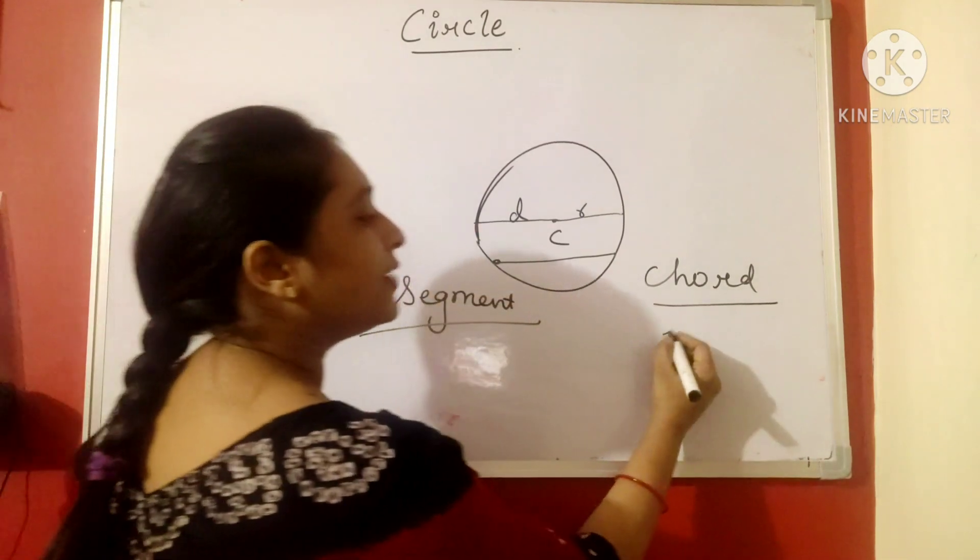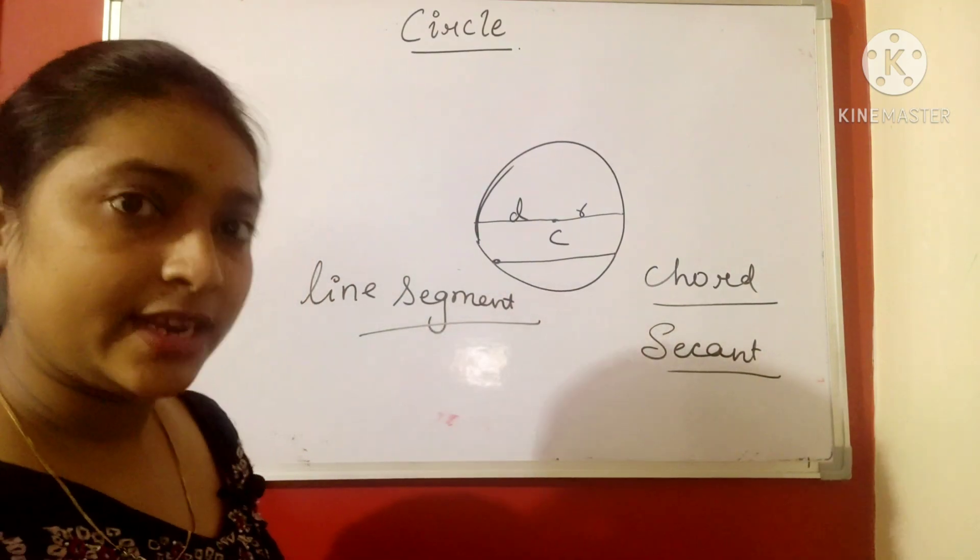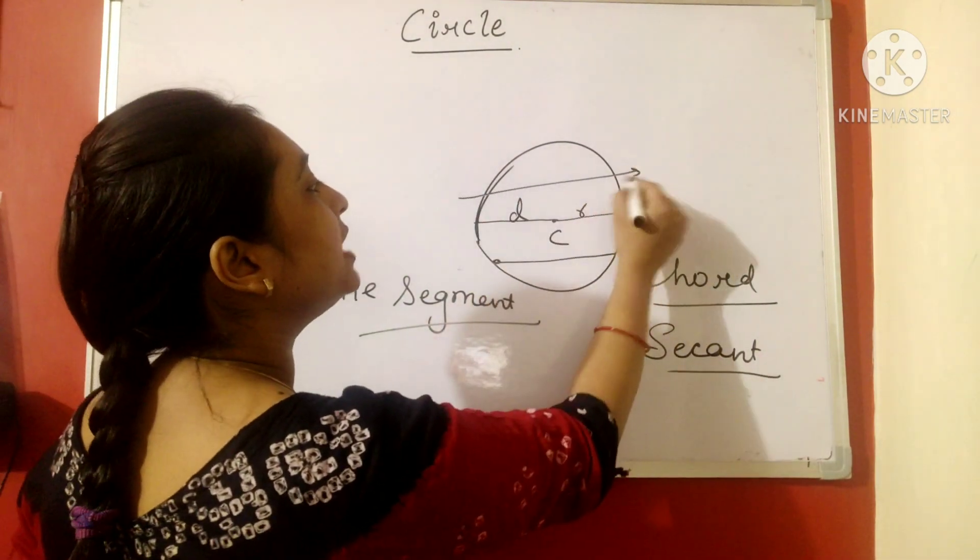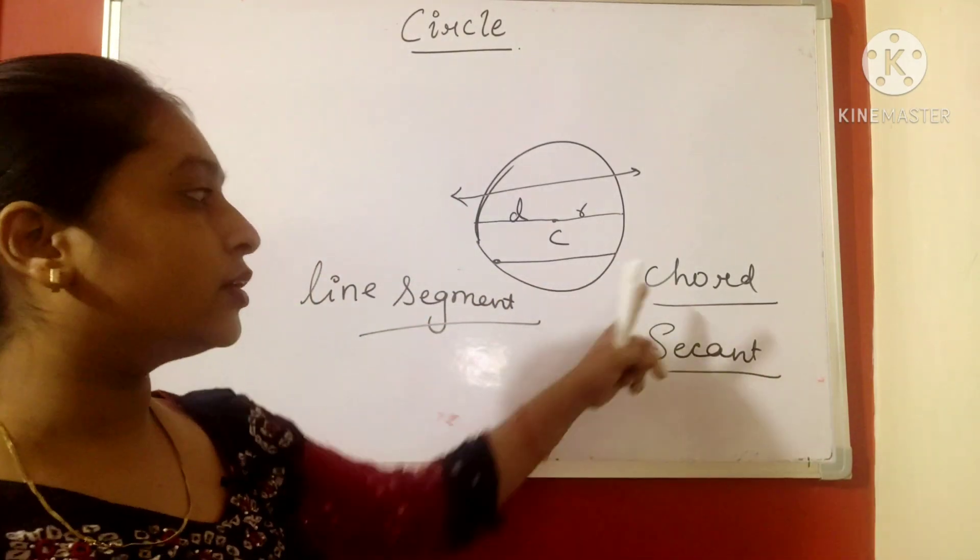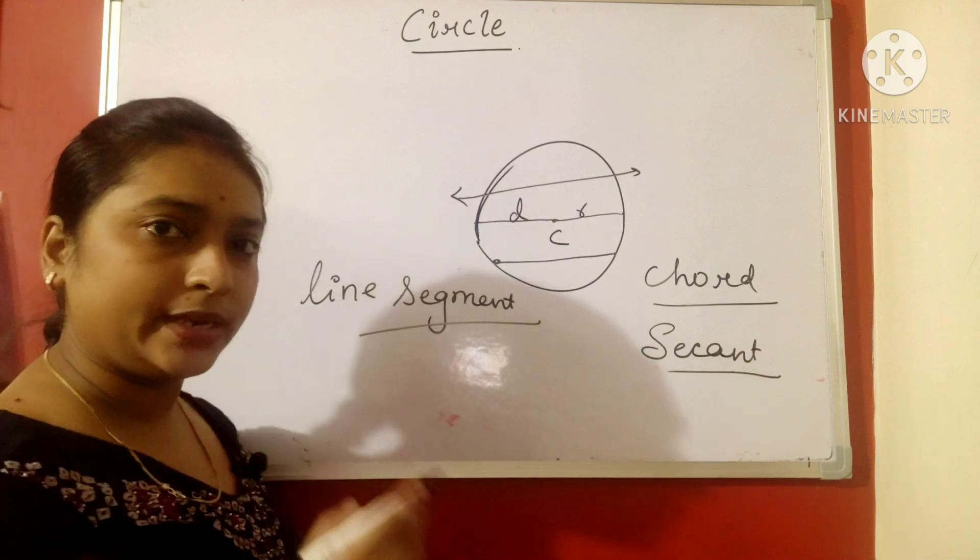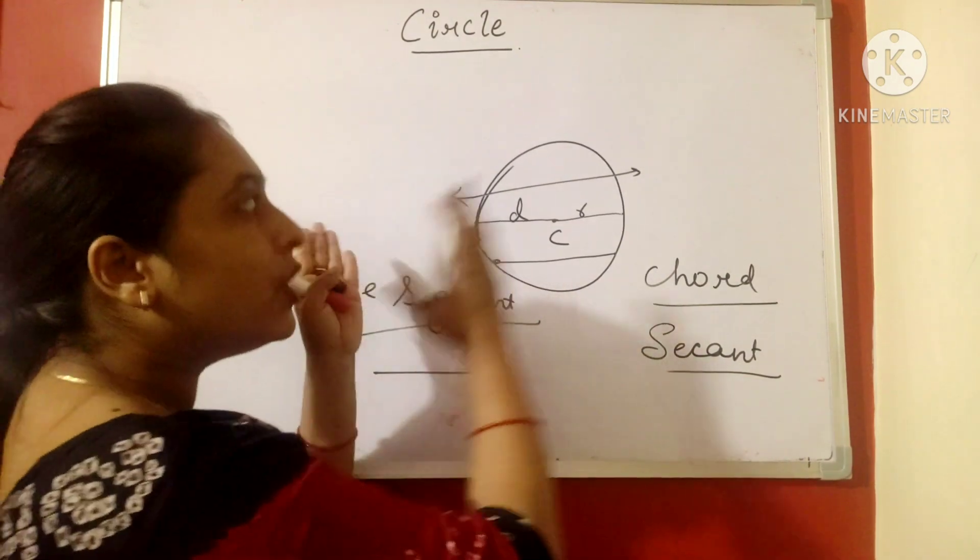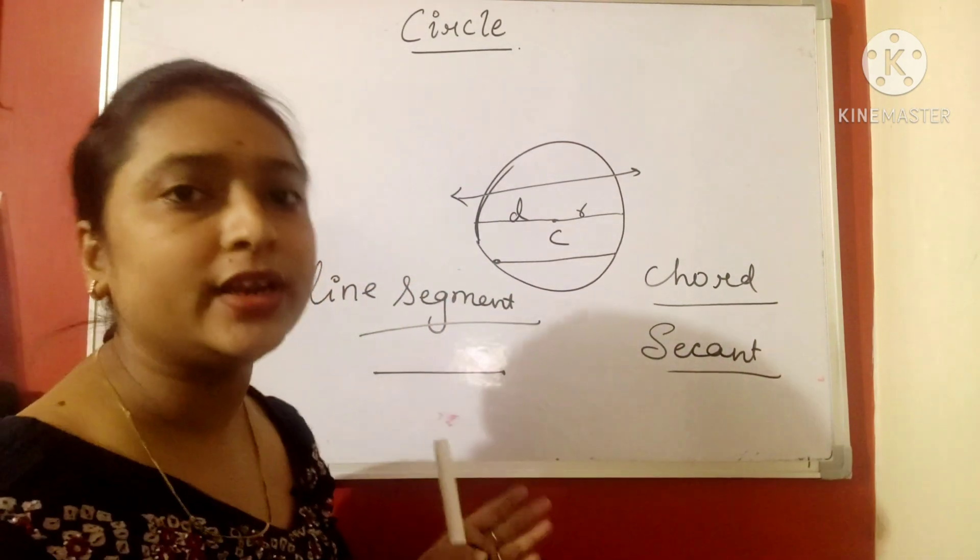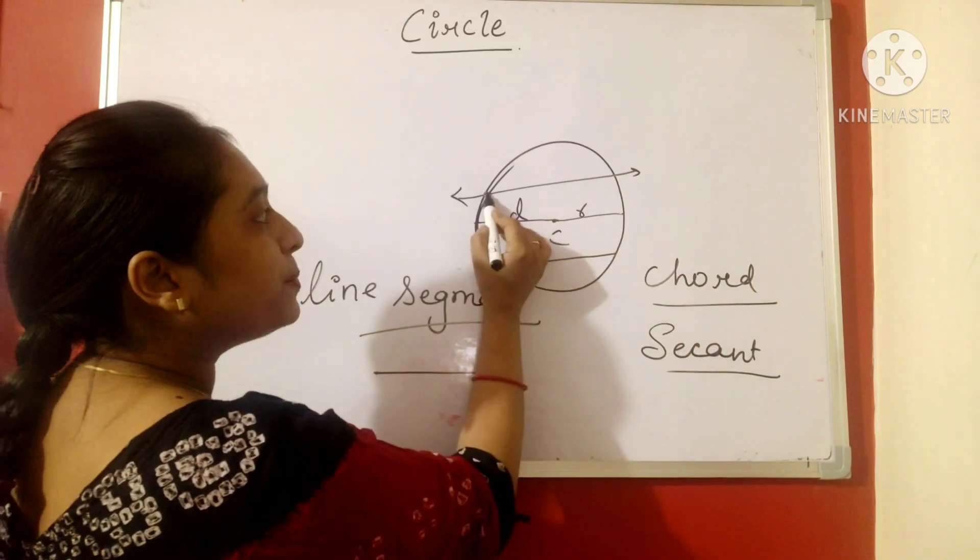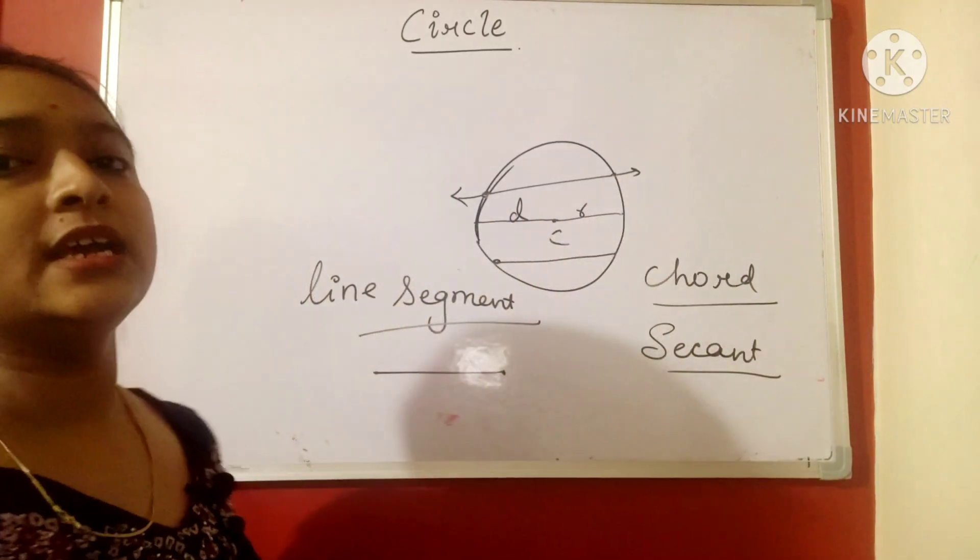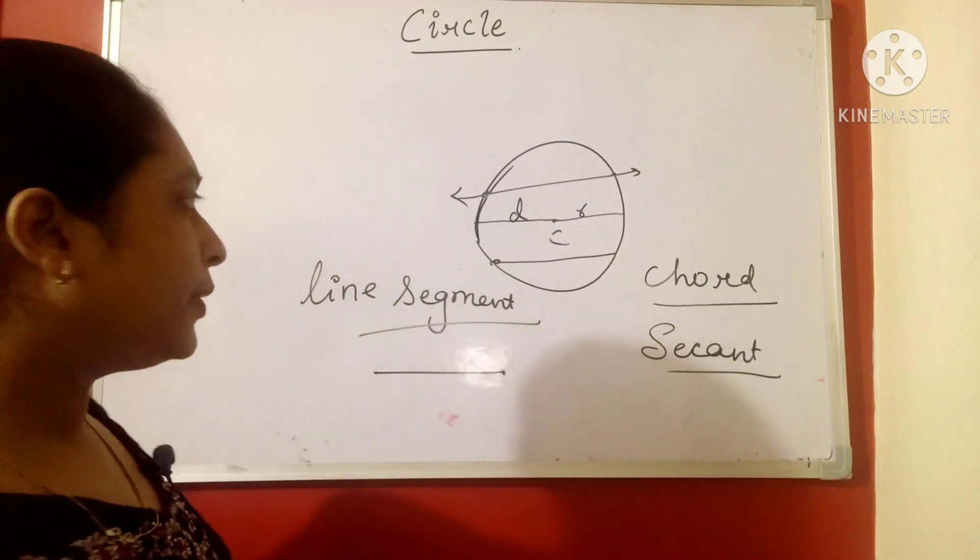Now another word I will be discussing, that is secant. Secant is a line that meets the circle at two points. There is a difference between the chord and the secant. Chord is a line segment. Line segment is of definite length and line does not have a definite length. So secant is a line which meets the circle at two points. And chord is a line segment that touches the two part of the circle.